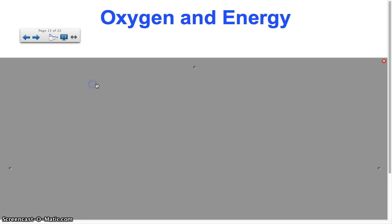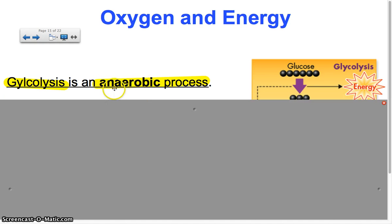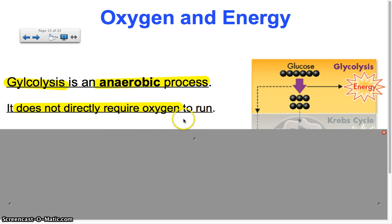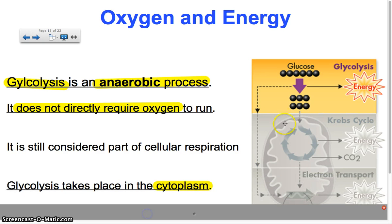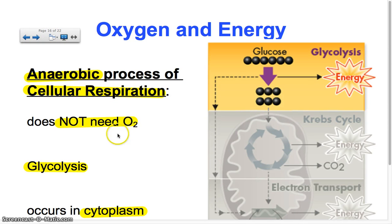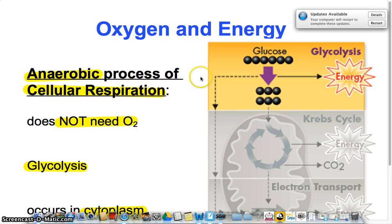Which one will be anaerobic? Glycolysis is the anaerobic process. 'An' means without, so anaerobic means without oxygen — it does not require oxygen to run. But glycolysis is still part of cellular respiration; it just doesn't need oxygen for that first part. Glycolysis takes place in the cytoplasm, before you get into the mitochondria. So to summarize: the anaerobic process is glycolysis in the cytoplasm, and the aerobic processes are the Krebs cycle and the electron transport chain inside the mitochondria.